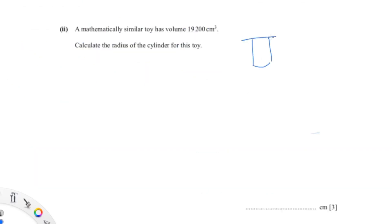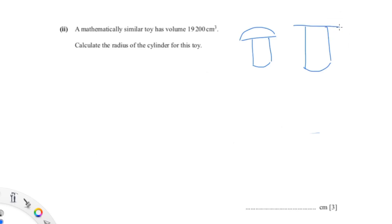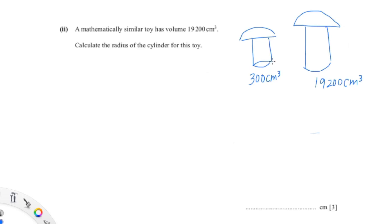For the last question, I'm going to draw the two shapes. This is the original shape and this is the mathematically similar shape, which I'll draw larger. The volume for the original shape is 300 cm³ and the volume for the similar shape is 19,200 cm³, as given in the question. We know the radius for the original cylinder is 1.6 cm.